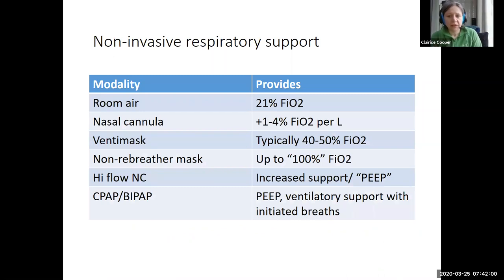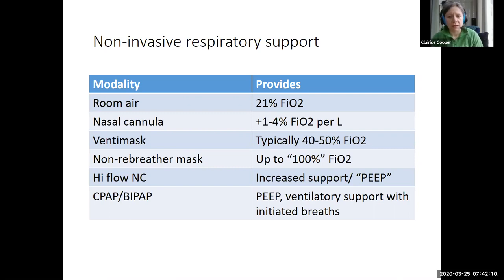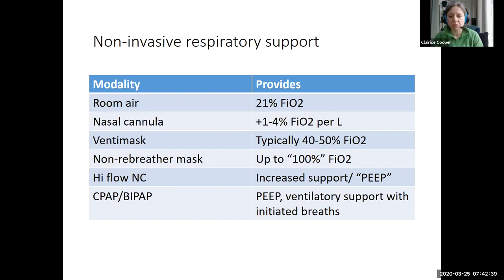Prior to getting on the ventilator, you may have escalating levels of respiratory support. This slide primarily focuses on oxygenation. At room air, we're at 21% FiO2 — we're not going to withhold oxygen from patients, so that's kind of your minimum. When you put a nasal cannula on a patient, depending on what you read, that will add anywhere from one to four percent FiO2 per liter. So if they're on four liters nasal cannula, that's adding perhaps 12% to the 21, putting you in the ballpark of maybe 40% FiO2.